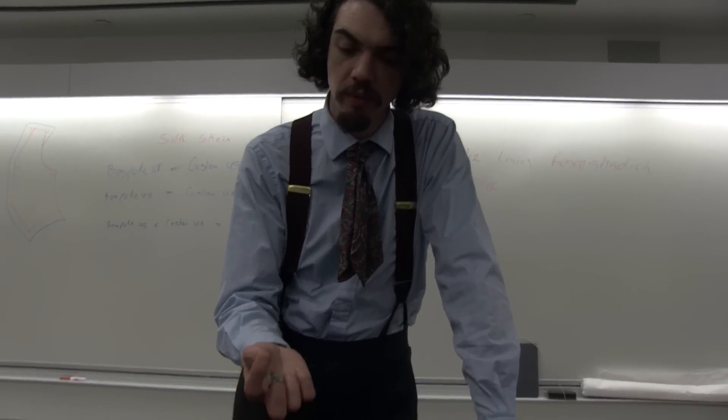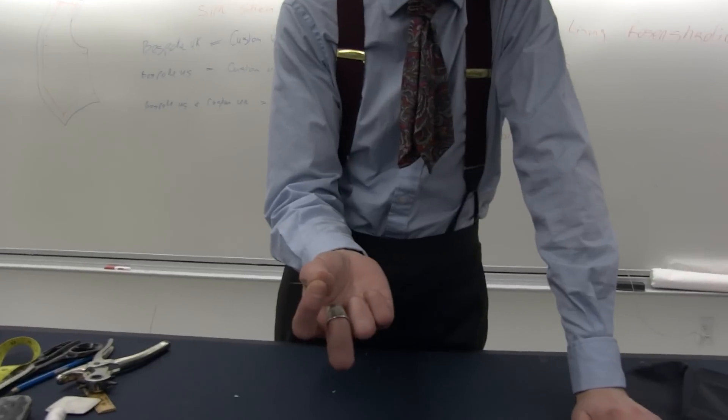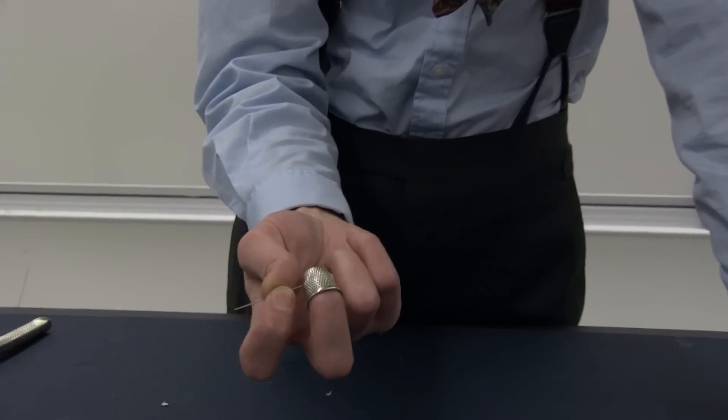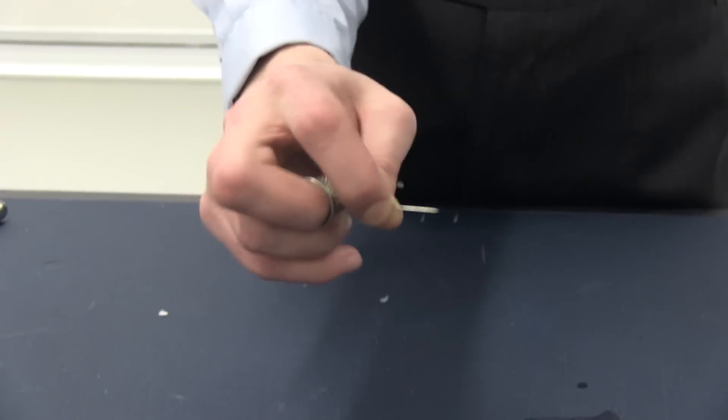We wear the thimble on the middle finger, hold it between the forefinger and thumb. We push the needle with the front of the thimble like so.